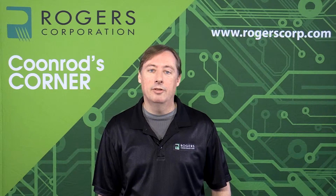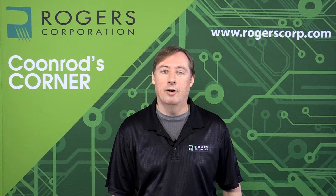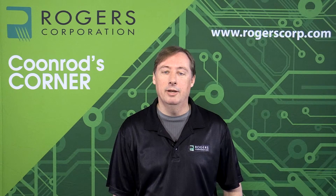Radiation losses have several different dependencies. Radiation losses are frequency dependent, thickness dependent, and also dielectric constant dependent. The higher the frequency, the more radiation loss. The thicker the circuit, the more radiation loss. And the higher the dielectric constant, or Dk, the lower the radiation losses. So Dk and radiation losses are inversely related.